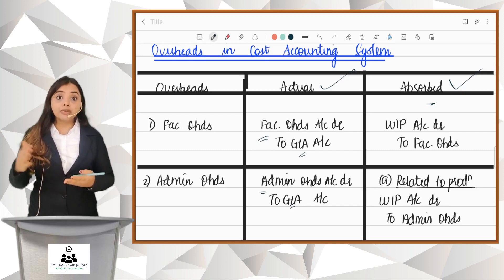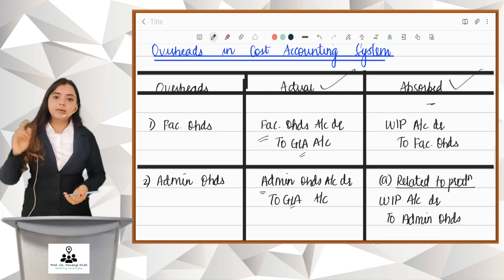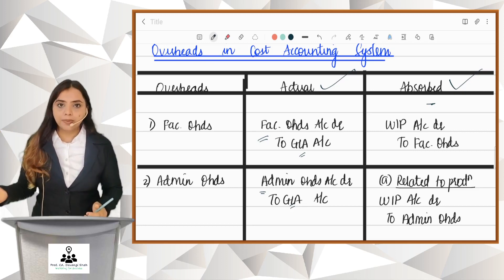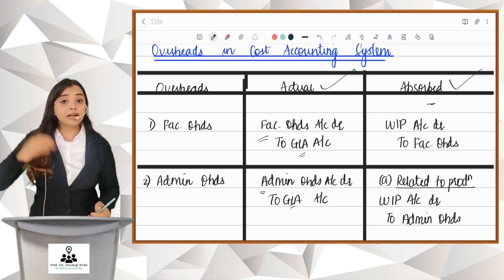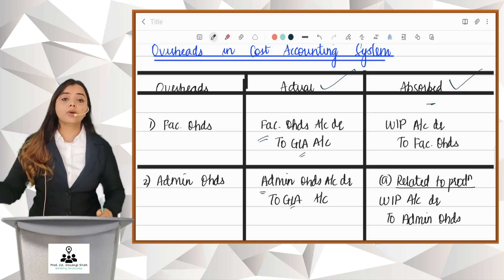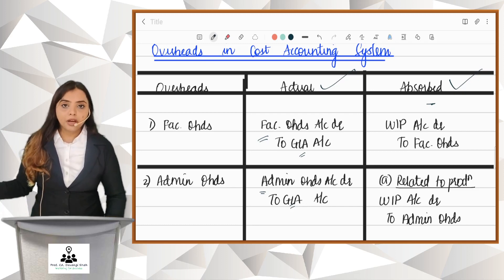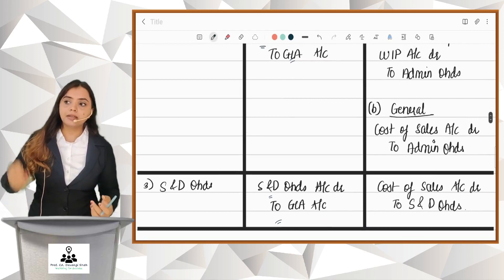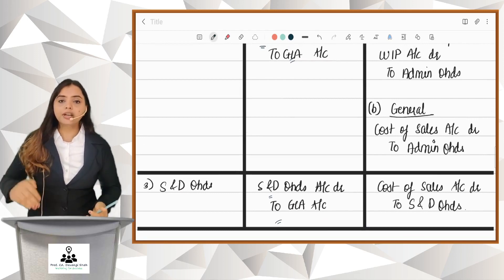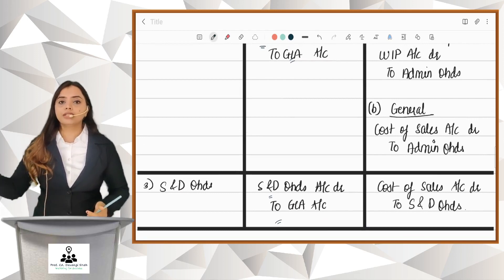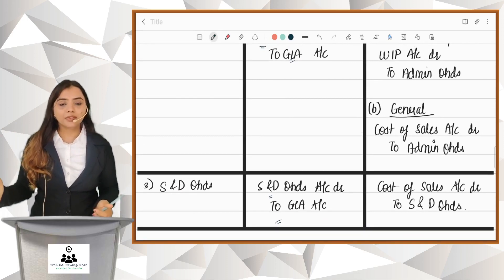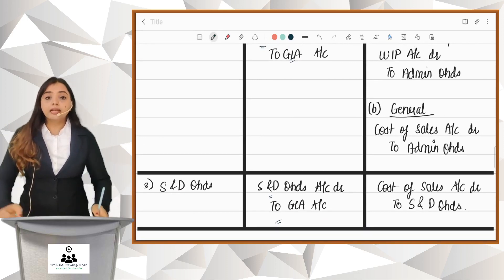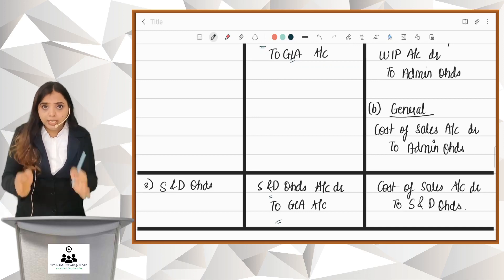Similarly, if there are admin overheads such as admin salary, the financial entry would be salary to cash/bank. In cost accounts, it will be: Admin Overheads Account debit to GLA. For selling and distribution overheads, let's say there is sales commission — we pass commission to cash/bank in financial accounts. In cost accounts, it will be: Selling and Distribution Overheads Account debit to GLA.